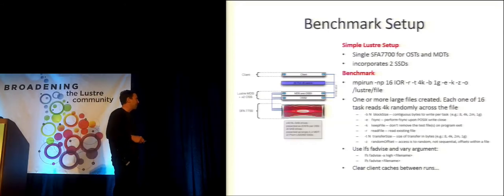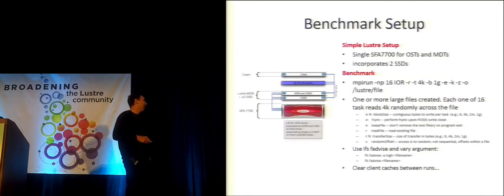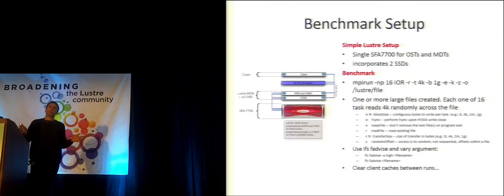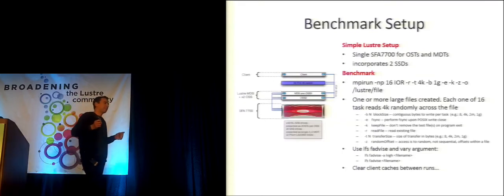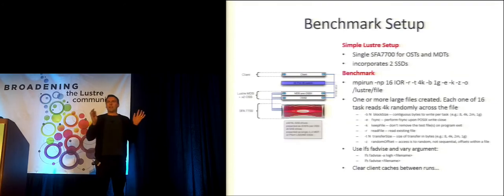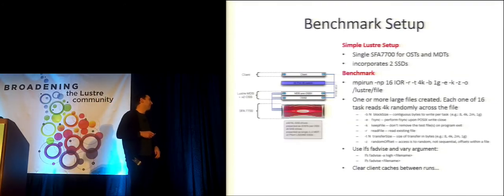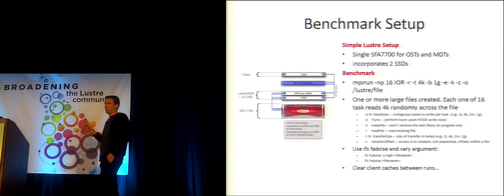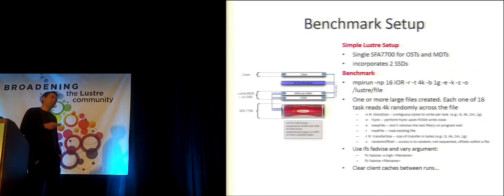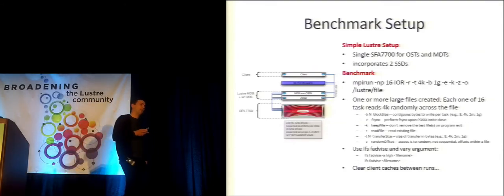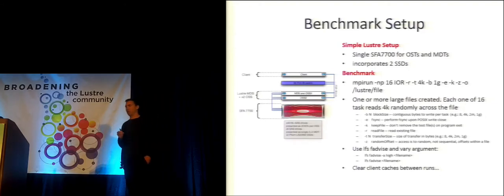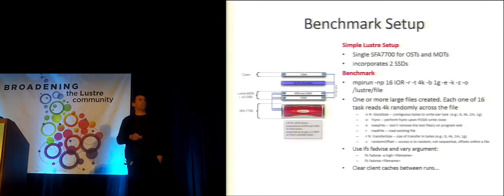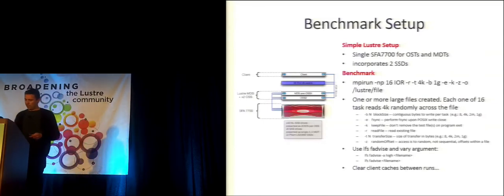We set up a fairly simple benchmark using IOR. The plan is to create many large files — a few gigabytes each — and then have client threads concurrently do random reads of varying transfer sizes into those files. We compare the baseline with no acceleration against the case where we used LFS FAdvise to promote data in advance to the SSD cache or to OSS RAM. Between all tests, we clear all caches throughout the system to avoid any auto-magic contaminating results.